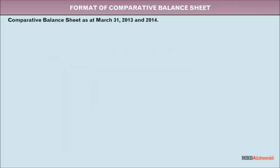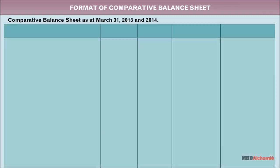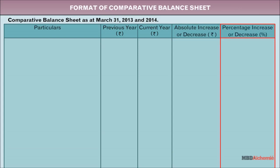The format of comparative balance sheet has five columns. The first displays the particulars. The second column displays the amount of the previous year for a specific item. The third column displays the amount of the current year. The fourth column displays the absolute increase or decrease, and the fifth column displays the percentage increase or decrease for a specific item.